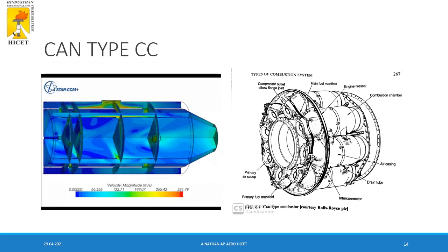In the can type combustion chamber, several cans are arranged in sequence. Inside every can, the combustion process happens similarly to a piston-cylinder arrangement — combustion occurs in specific cans only. The main advantage is that if any one can gets damaged, it can be replaced easily, and a small amount of mass flow is sufficient for proper combustion. However, a serious disadvantage is that it has higher weight compared to other types.